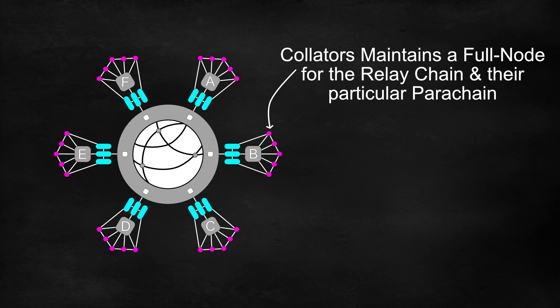It should be noted that collators maintain a full node for the relay chain and a full node for their particular parachain, which means that they retain all of the necessary information to be able to offer new blocks and execute transactions.